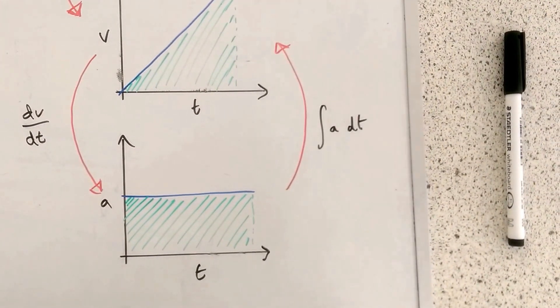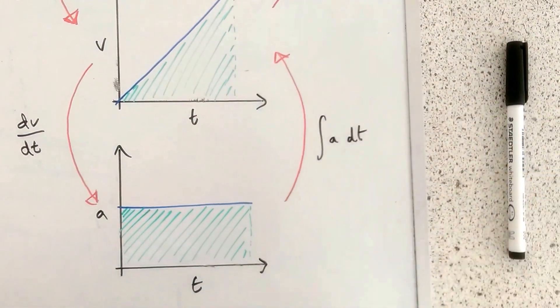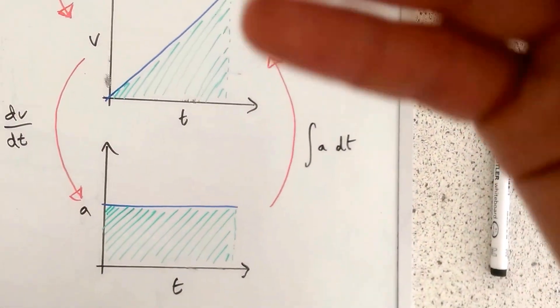So we can see the acceleration is a constant. So down the way we've done the gradients from displacement to velocity to acceleration.